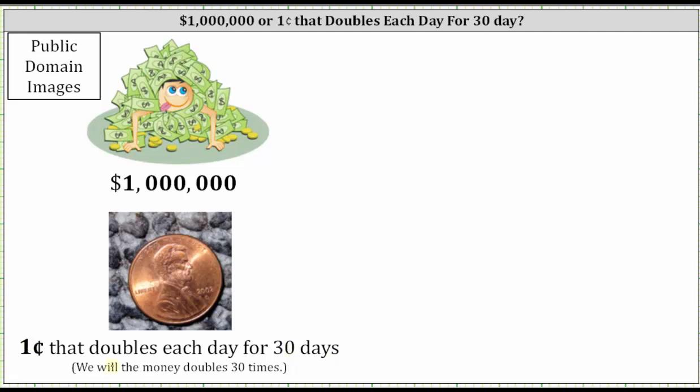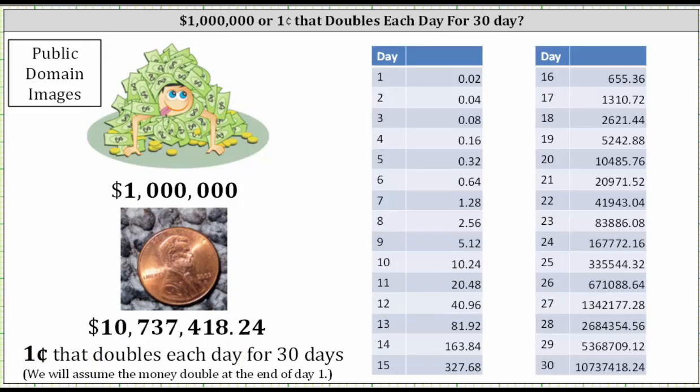For this problem, I am assuming at time zero the starting amount is one cent and then it begins doubling on day one. So if one cent doubles on day one, the total amount is two cents. On day two, it's four cents. On day three, it's eight cents and so on.